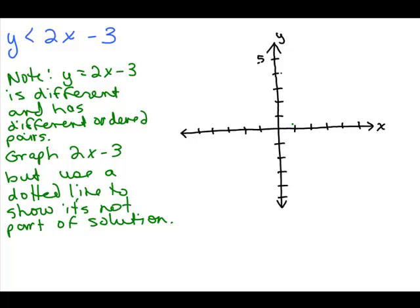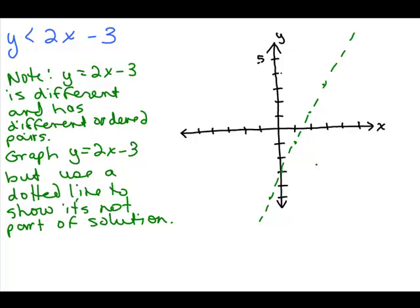So you see the dotted line of y equals 2x minus 3. Convince yourself: if you plugged in the ordered pair (2, 1), you would say 1 is less than 1, which is impossible. The solutions will be either all on one side of the line or all on the other side. We have to decide which side should be shaded. An easy way is to pick one ordered pair not on the line and see if it's a solution — try (0, 0) since it's so easy to plug in.